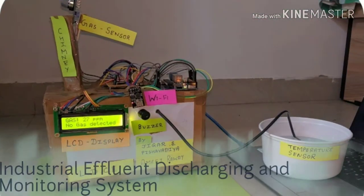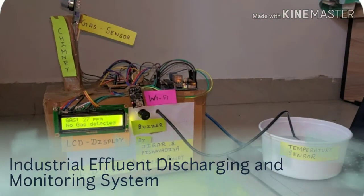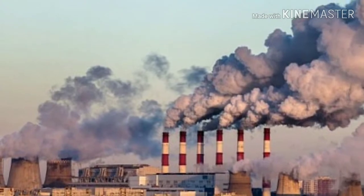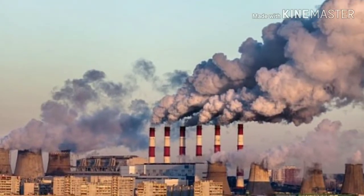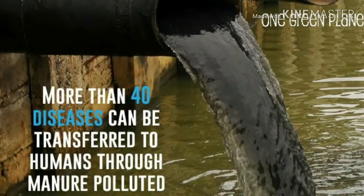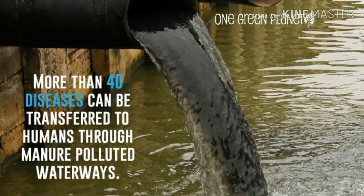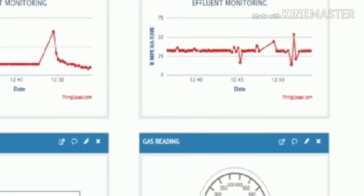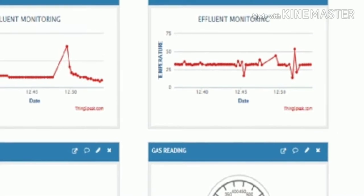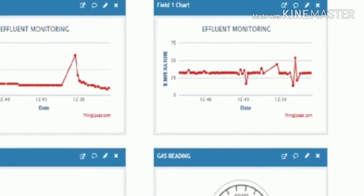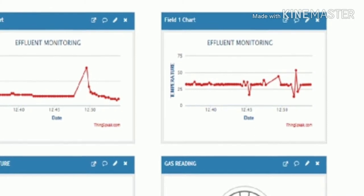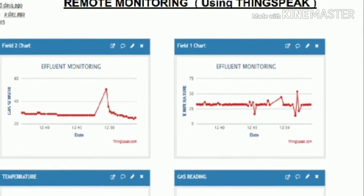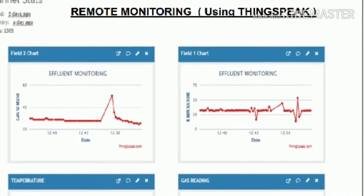We had done a final year project on the topic industrial effluent discharging and monitoring system. In our project, we are trying to monitor the waste or effluents discharging from industries and provide that data to government, so that we can keep an eye on the waste and penalize those small scale industries or persons who illegally done smelting of iron when they cross certain limits as decided by PCB, which is the Pollution Control Board.